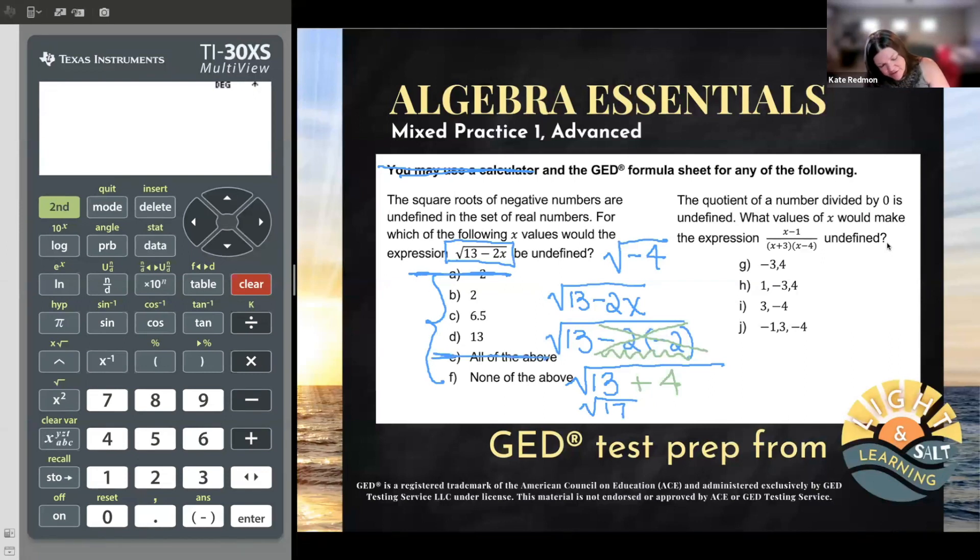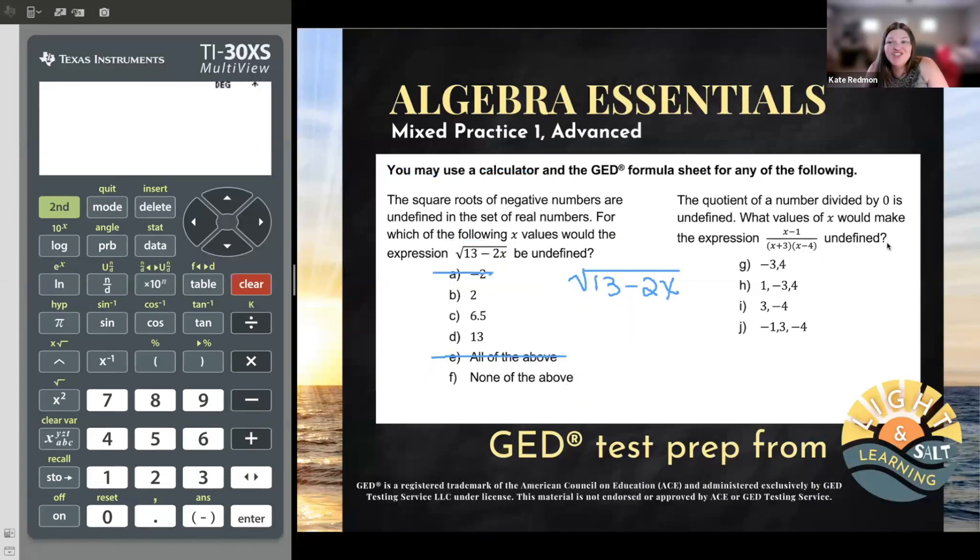Let's try substituting in the next value and see if it makes this expression undefined. Next one is 2. So we'll have the square root of 13 minus 2 times 2. And again, we'll do our multiplication first, but a little easier this time. So 2 times 2 is 4. And then of course, 13 minus 4 is 9. Now you might say, Kate, I know what the square root of 9 is.